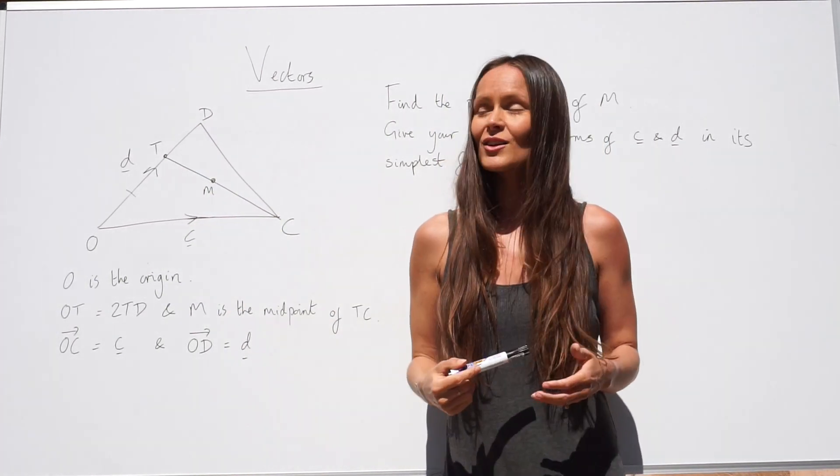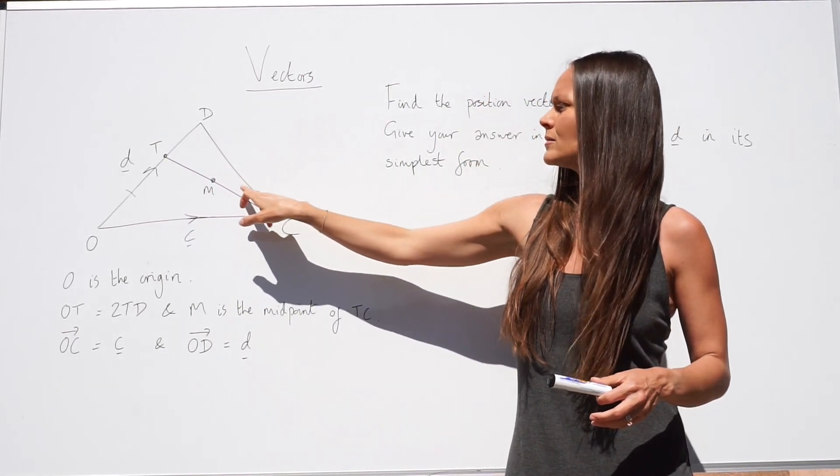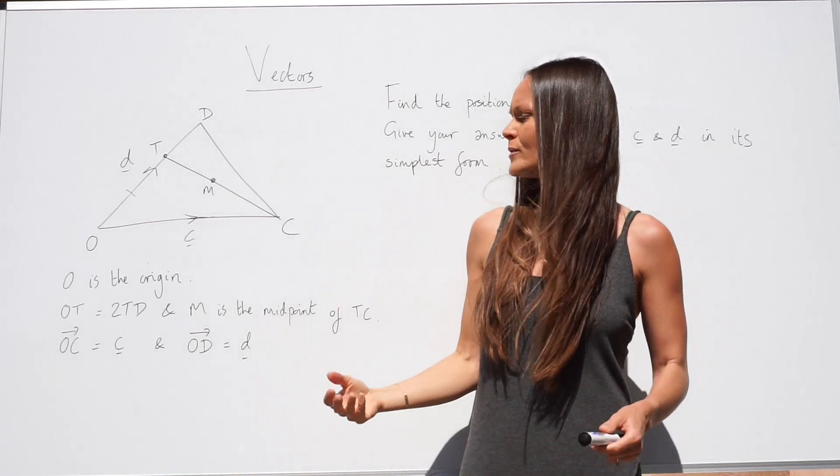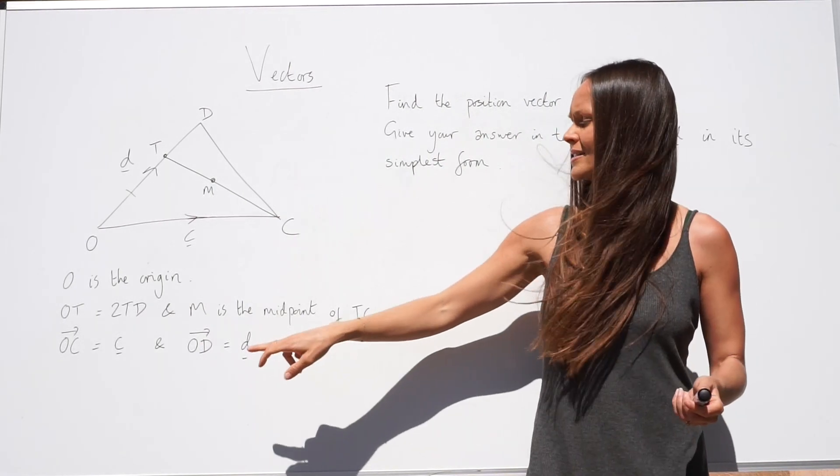M is the midpoint of TC, so that just means M is halfway along the line TC. And then finally we've got the vectors. OC is equal to vector C and OD is equal to vector D.